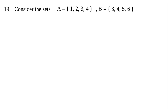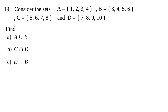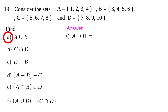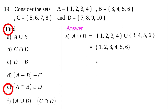Consider the four sets A, B, C, and D — some questions are attached to them. For question (a), A union B: A is {1, 2, 3, 4} and B is {3, 4, 5, 6}. A union B is the set of all elements which are either in A or in B, therefore A union B equals {1, 2, 3, 4, 5, 6}.